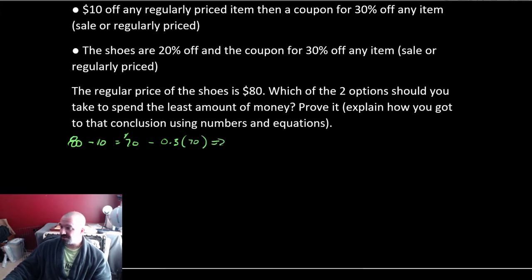What this is going to do is it's going to give you 70 minus, and then 3 times 7 is 21, and then we move the decimal over. So, well, 10% would be 7. And so if we multiply that by 3, we get 21, so minus 21. So this is going to give us $49. So if we take $10 off, and then our 30%, we get $49.